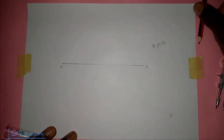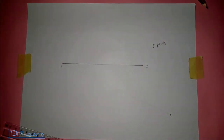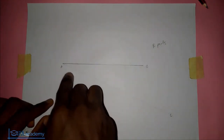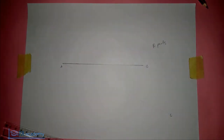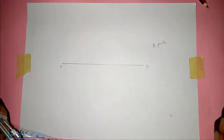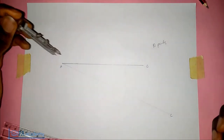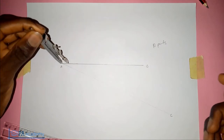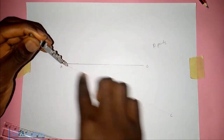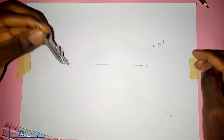So now on that line AC, what you are going to do is mark 10 points on that line. Don't forget you are dividing line AB into 10 equal parts. I will be using a compass for that. So from point A, I will be dividing this line into 10.